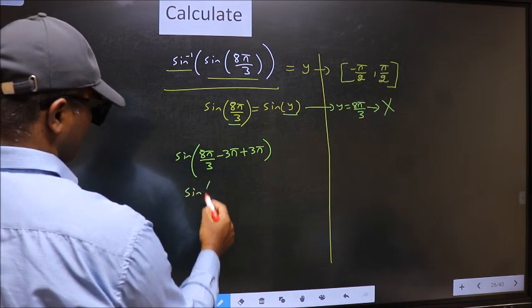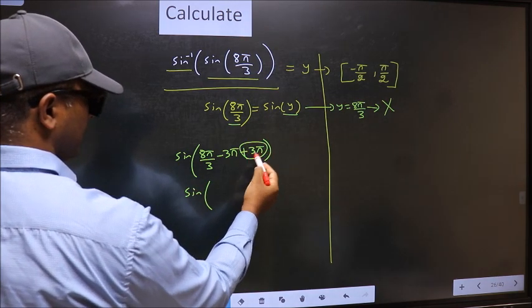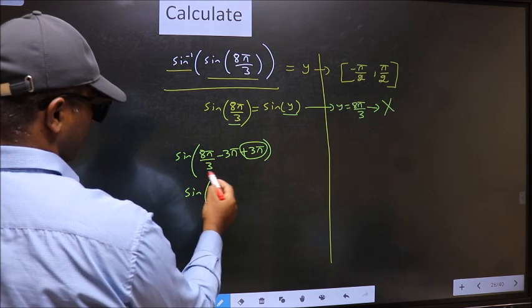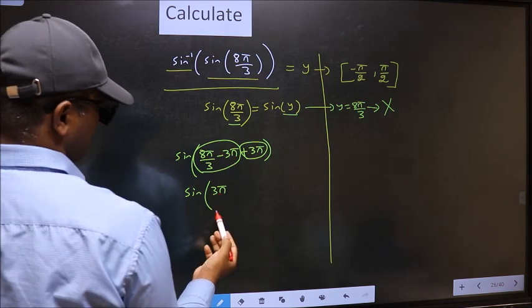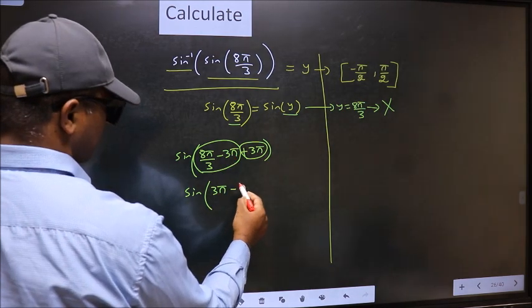Sin. Now 3π I write before and calculate this: 8π/3 minus 3π. We get minus π/3.